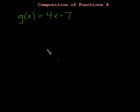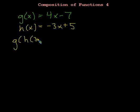And we could have an h of x, and we'll say that in this case it is negative 3x plus 5. And this time what we're going to do is we're going to try to figure out what g of h of 3 is.